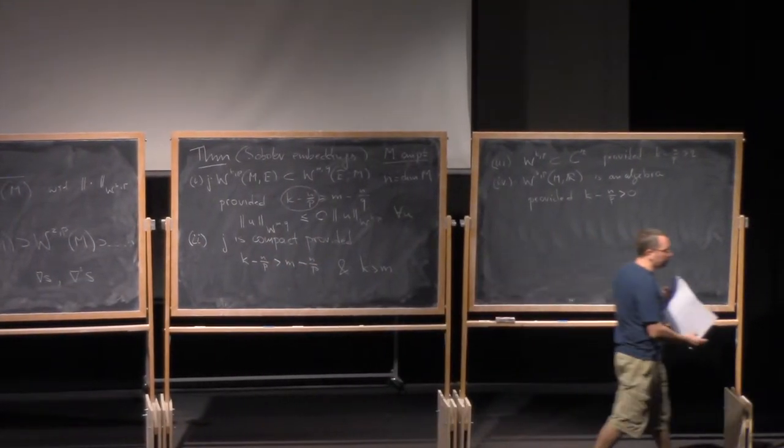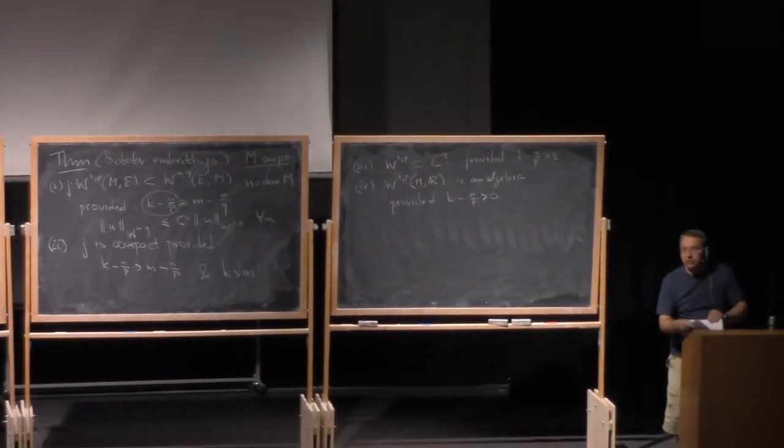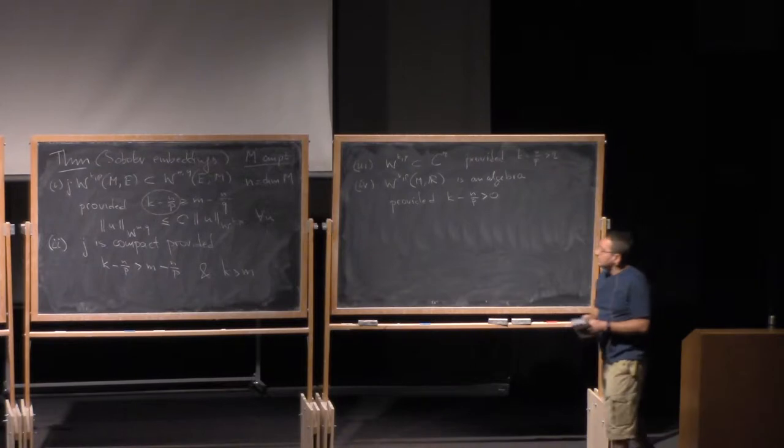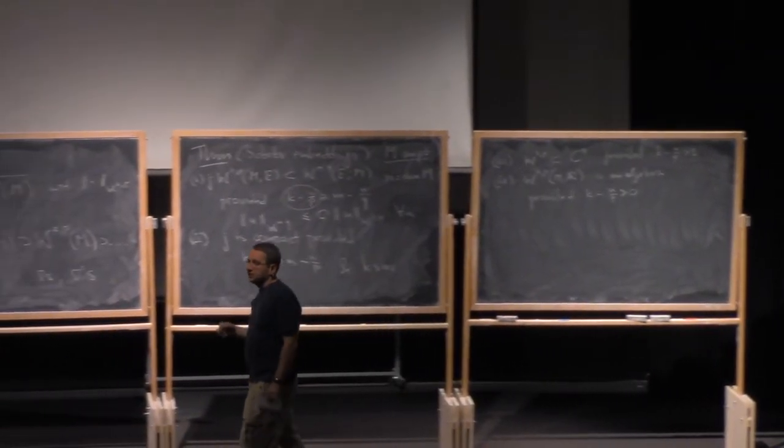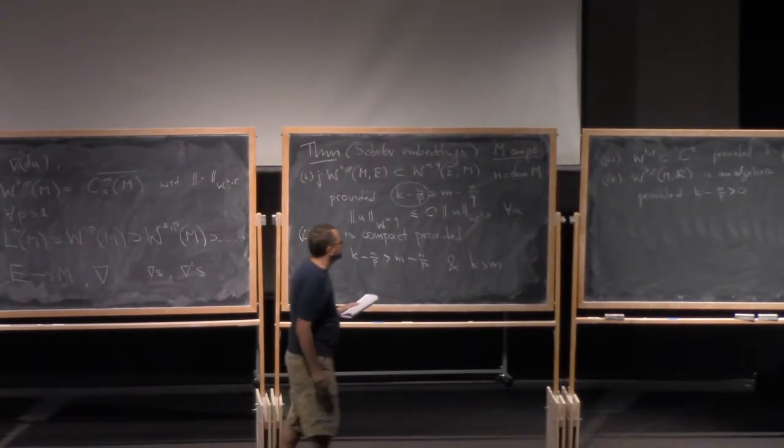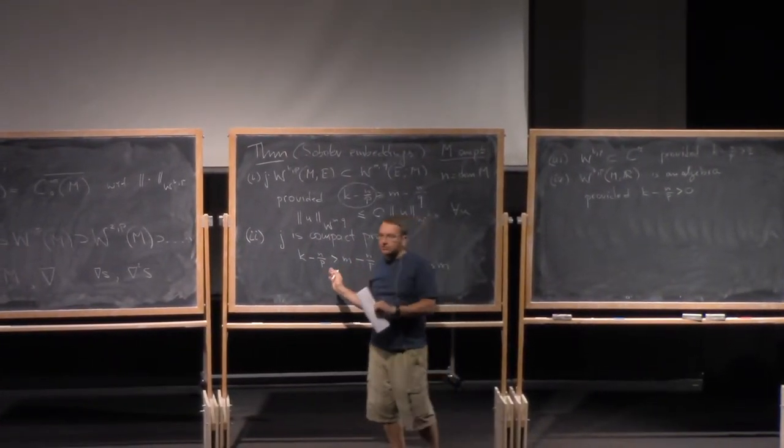Right, so as you see, this number, k minus n over p, appears over and over again, and it essentially tells you the properties of the functions in the Sobolev space. So I don't want to prove the theorem. The proof is pretty much involved, but I wanted to tell you just maybe one particular example where you can see what is actually going on. Are there any questions to the statement of the theorem?